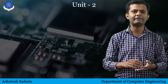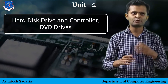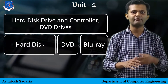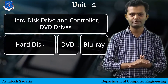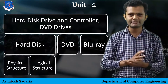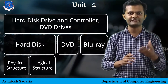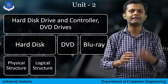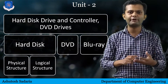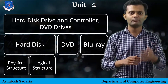In the second unit, we are going to learn about Storage Devices — Storage Devices like Hard Disk, DVD Drive, and Blu-ray Discs. We are going to learn about the internal structure of the Hard Disk, its physical structure and logical structure, and we are going to learn about DVD and Blu-ray Discs.